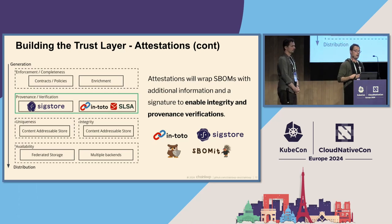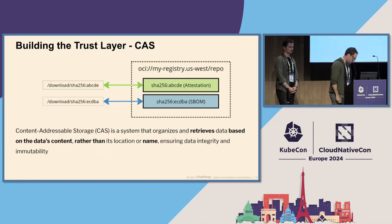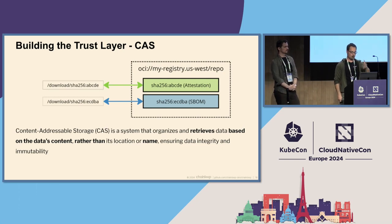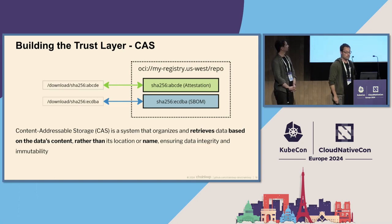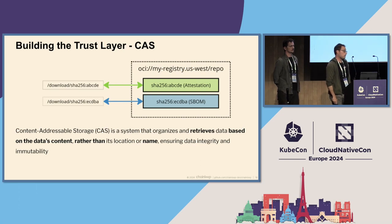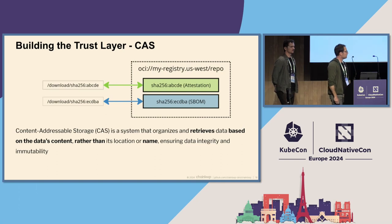So we could say we can cover provenance and verification — we've wrapped SBOMs. But now the next question is: where do we store it and how do we store it so we can also meet the uniqueness and integrity requirements? You could store it in a database or send it by email, but there is a much older concept — content-addressable storage — where you retrieve data by the digest of their content, not by name or metadata. That simple change enables integrity and immutability out of the box.